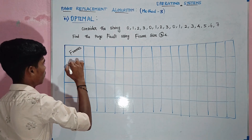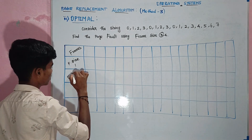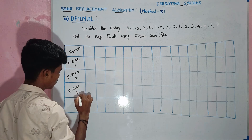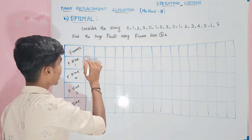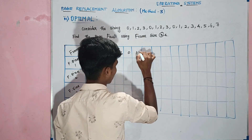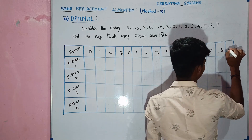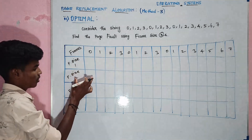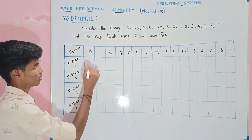Then frame size 1, frame size 2, frame size 3, frame size 4. OK: reference string is 0, 1, 2, 3, 0, 1, 2, 3, 4, 5, 6. OK.